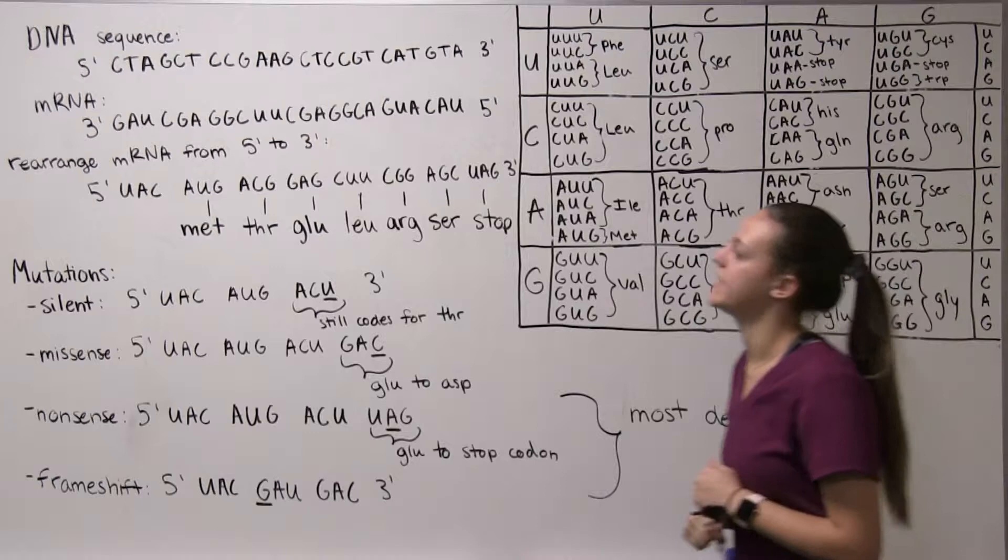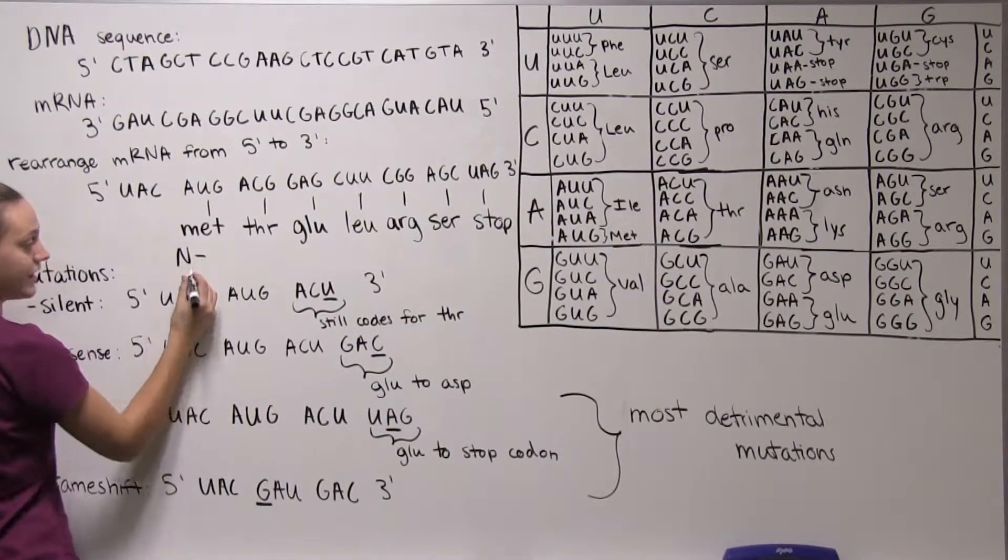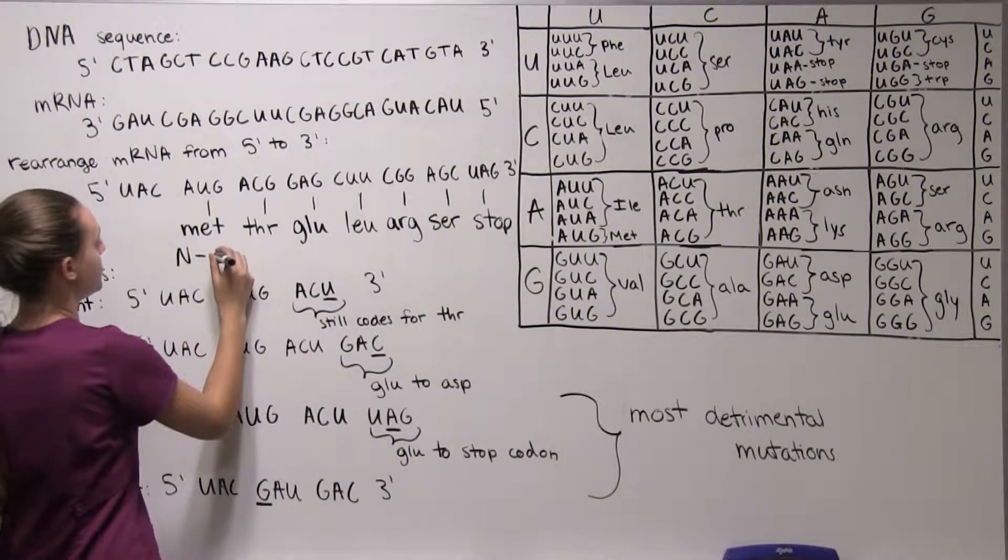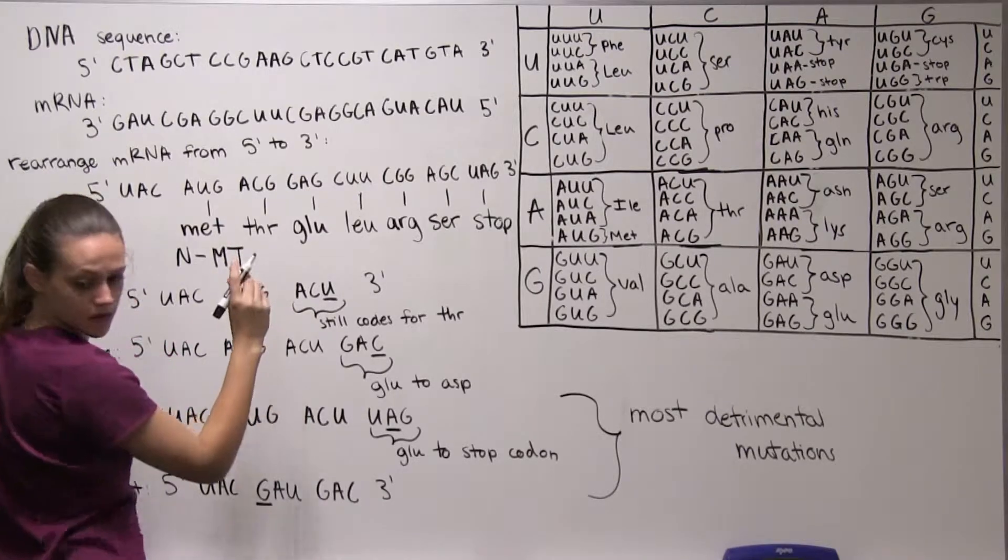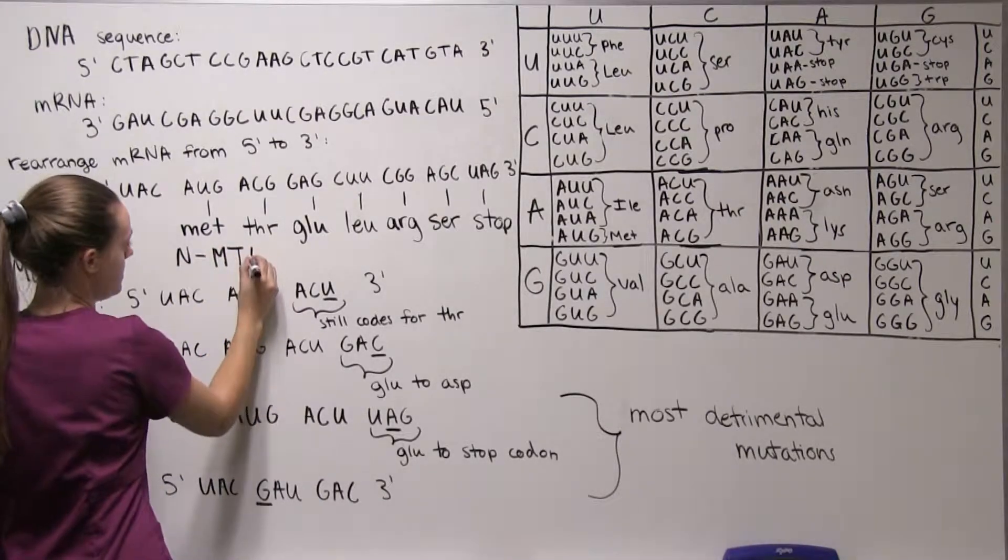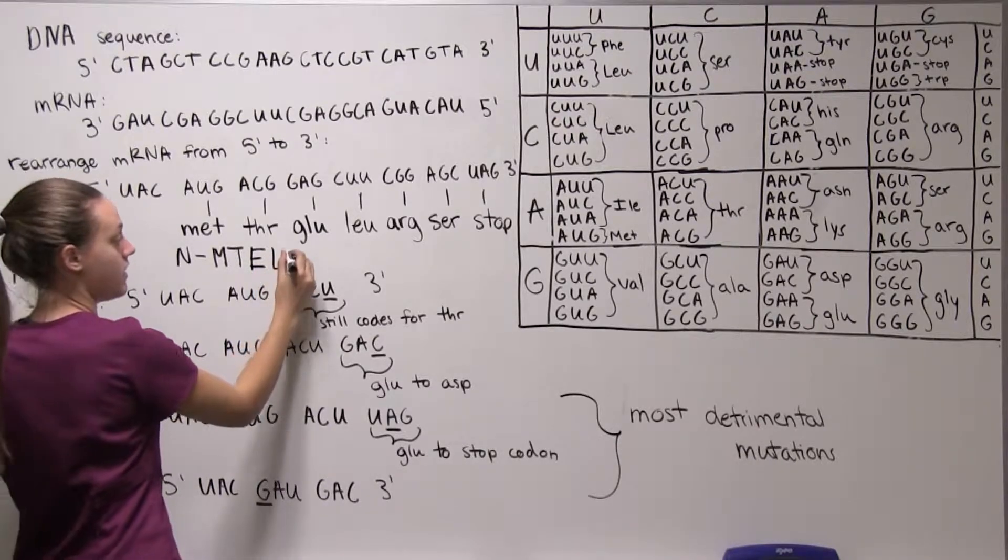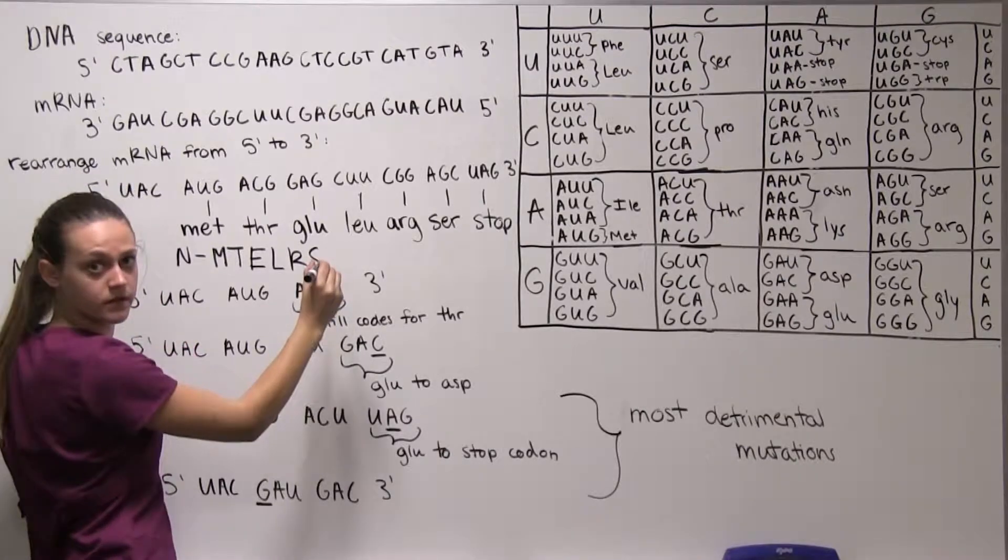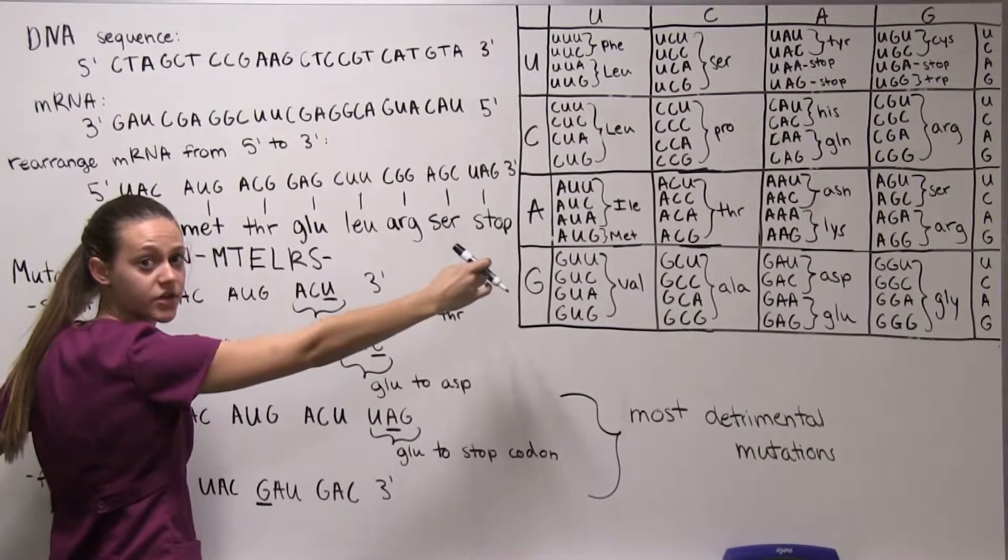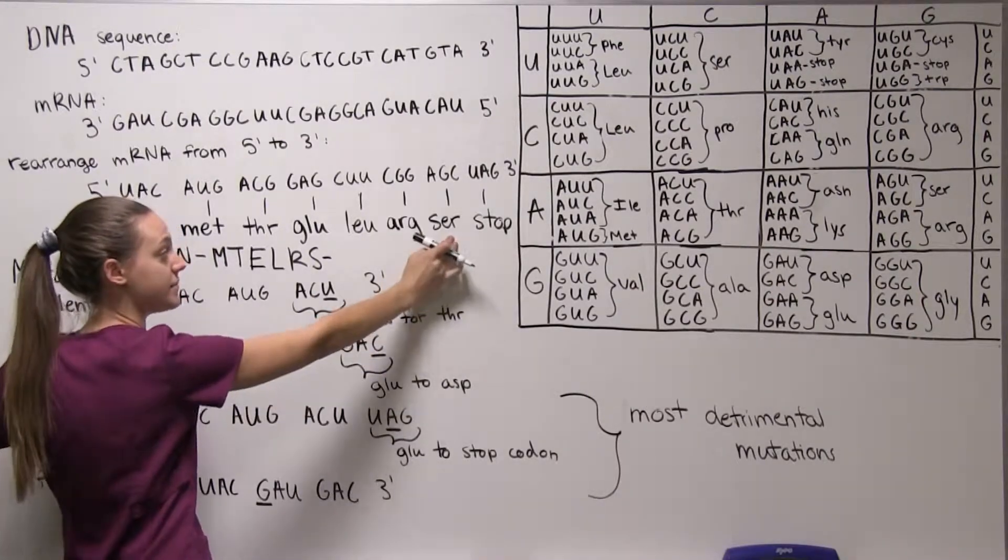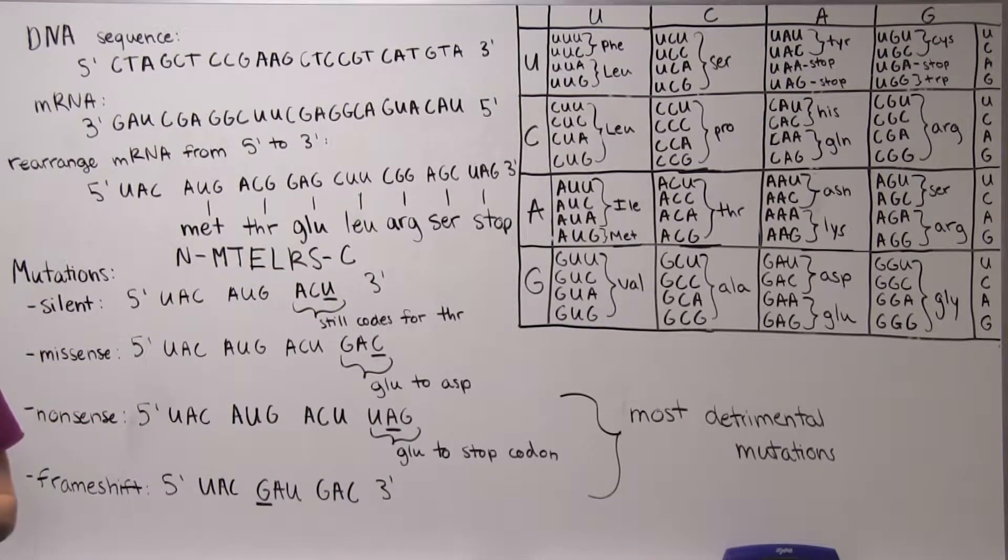Okay so if you were to write this as a peptide sequence you would have N as your beginning then you would have M-T-E-L-R-S and then that would conclude it because again UAG doesn't code for a peptide so you'd stop here at the serine and then put C for your C terminus, the end of your peptide chain.